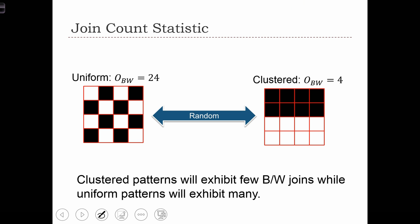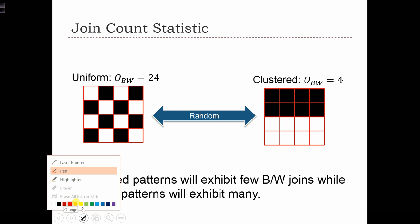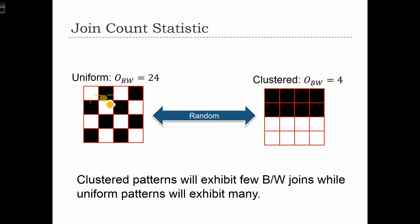Here we have two examples of the observed number of black-white joins: a uniform map on the left-hand side and a clustered map on the right-hand side. These are the two extreme cases. On the left-hand side, when the map is as uniform or dispersed as possible — this is negative autocorrelation — we have an observed black-white count that equals the total number of joins. In this map we have 24 joins, and all 24 of them are black-white joins.